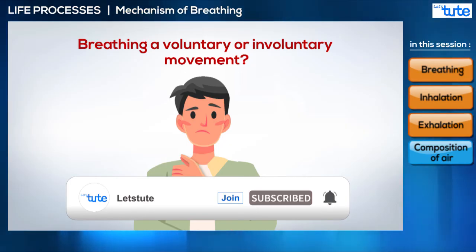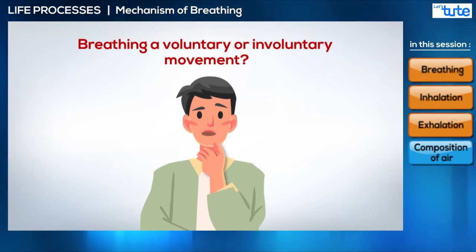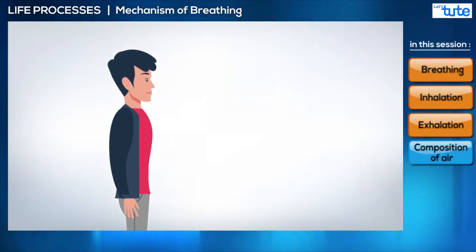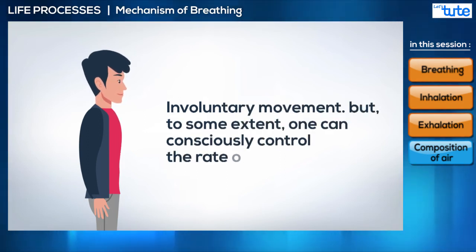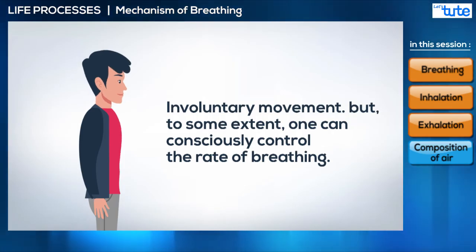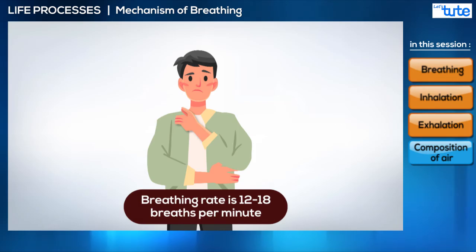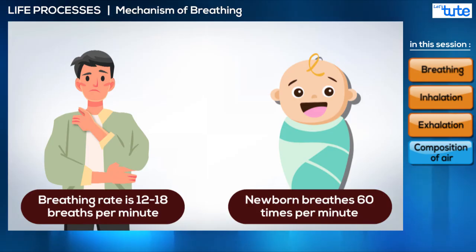Now, is breathing a voluntary or involuntary movement — can we control it? Breathing movements are normally not under our control or will; that is, they are involuntary. But to some extent, one can consciously control the rate of breathing. Did you know that a normal human adult's breathing rate is 12 to 18 breaths per minute, but a newborn breathes 60 times per minute?